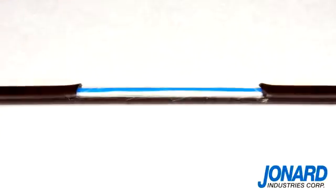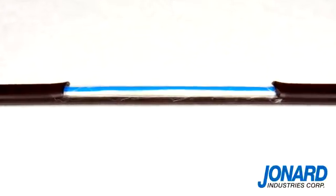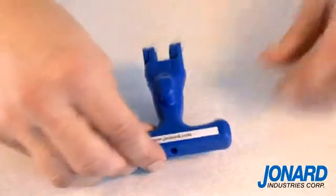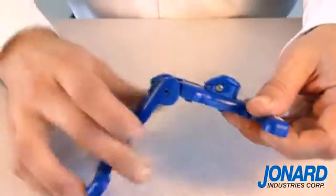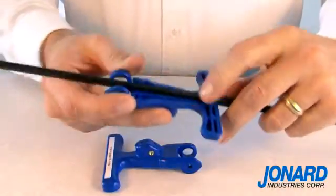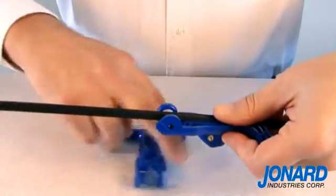The FOD2000 can also perform a mid span split on a flat fiber drop cable. A mid span split is accomplished by pulling the tool apart at the hinge. Place the two halves of the tool over the cable where you want the split.